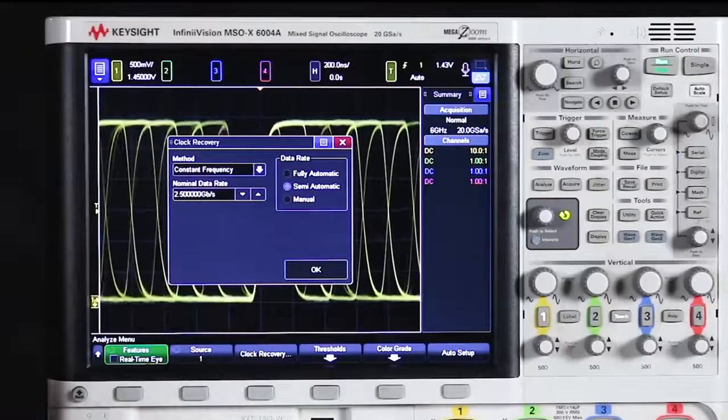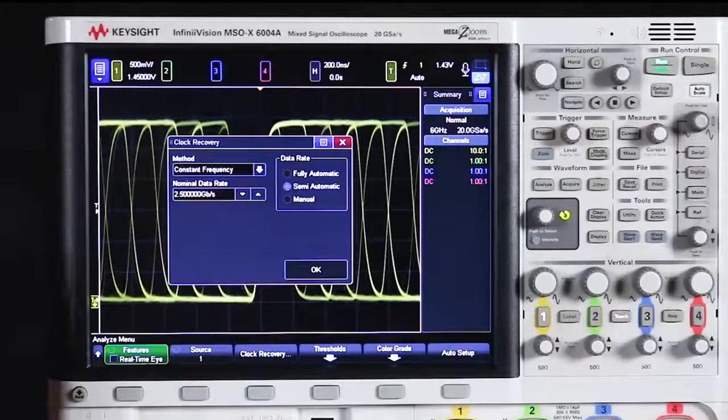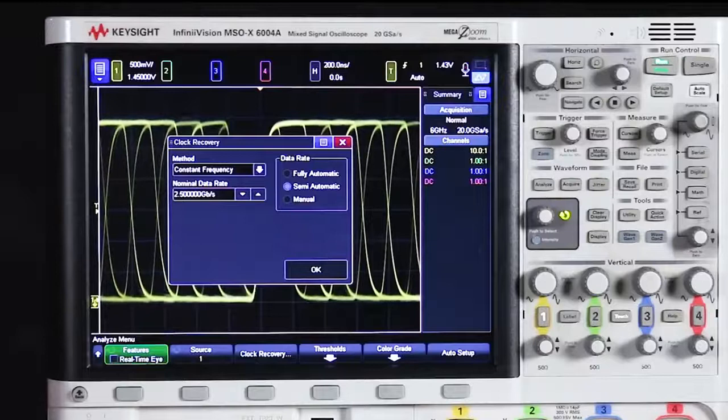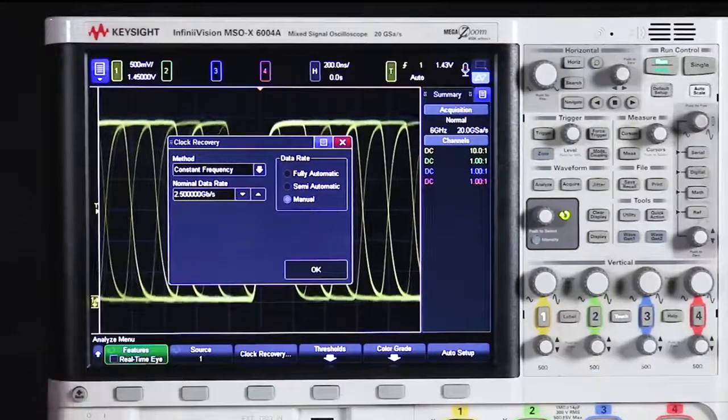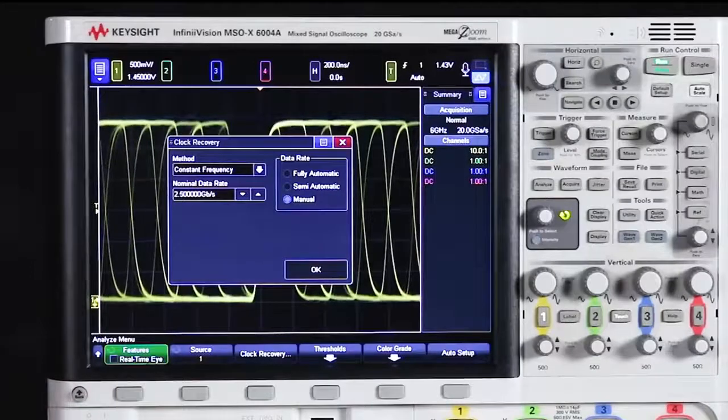Semi-automatic should be used when you have an estimate of what that bitrate is and you want the scope to use that estimate to figure out what the ideal bitrate should be. Manual is used when you know that exact ideal bitrate that you want to work with.